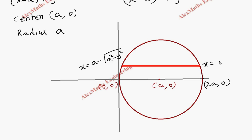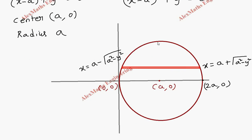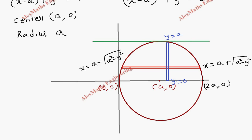The limit of y is from 0 to a, so we take a vertical strip from 0 to a. It starts from y equals 0 (which is the x-axis itself) and goes to y equals a, a horizontal line through y equals a. So the area under consideration is the upper half of the circle between y equals 0 and y equals a.